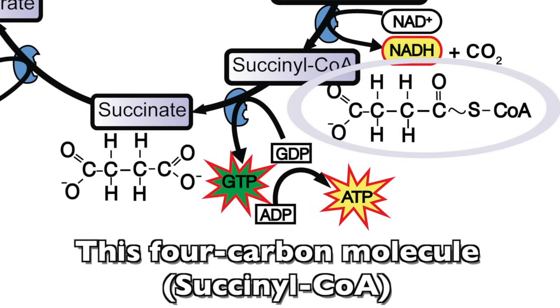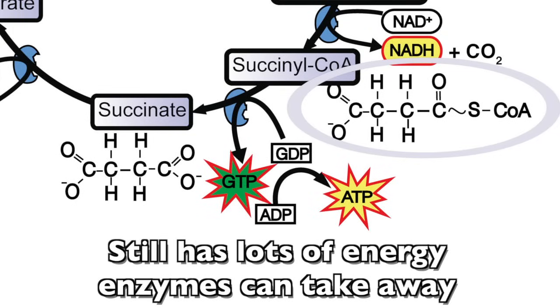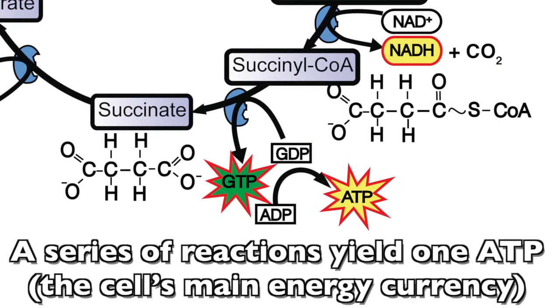This 4-carbon molecule, succinyl-CoA, still has lots of energy enzymes can take away. A series of reactions yield 1 ATP, the cell's main energy currency.